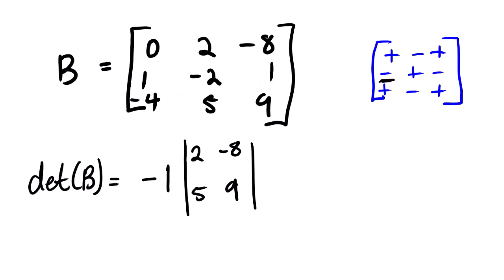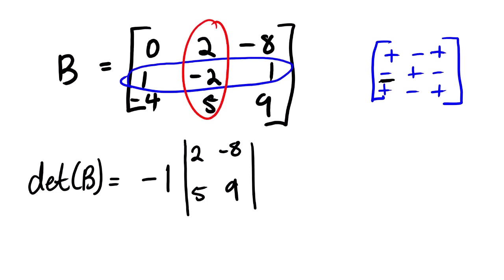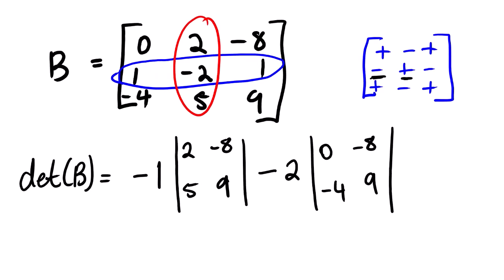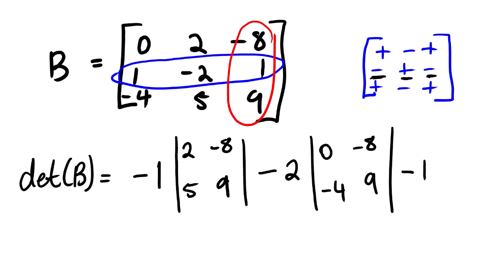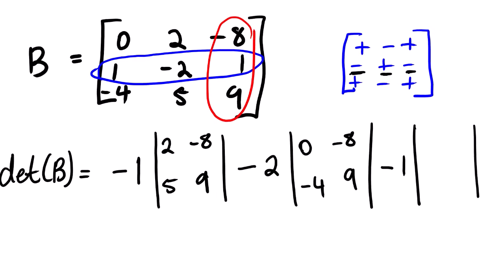Now we are done with the first element. The second element is negative two. The sign at row three, column two is positive, but with negative two it becomes negative two. The mini matrix has zero, negative eight, negative four, and nine. Now the third element: looking at the sign, it should be negative, so it will be negative one. We open up a matrix with zero, negative four, and five.